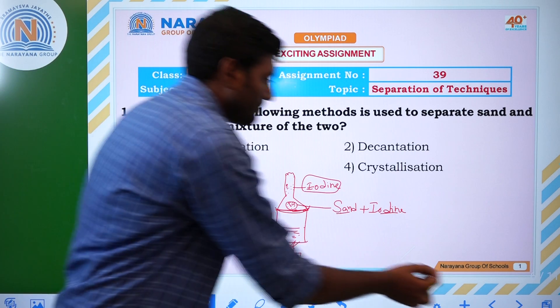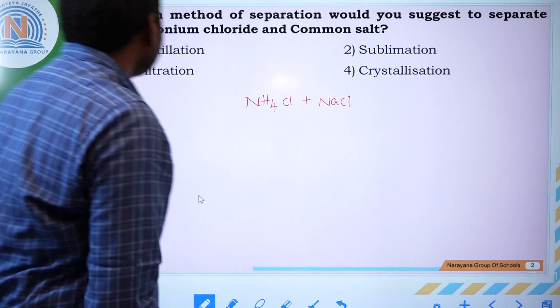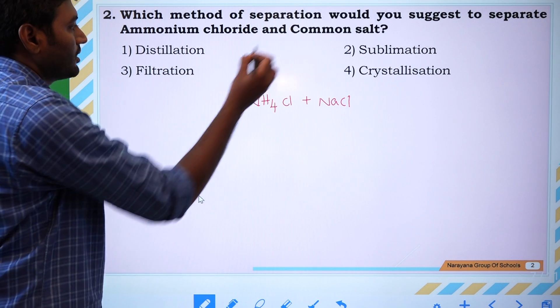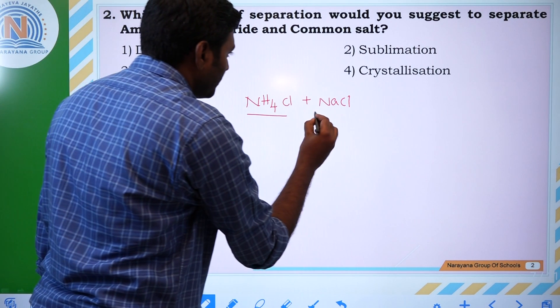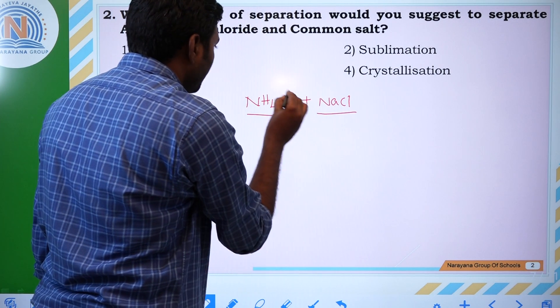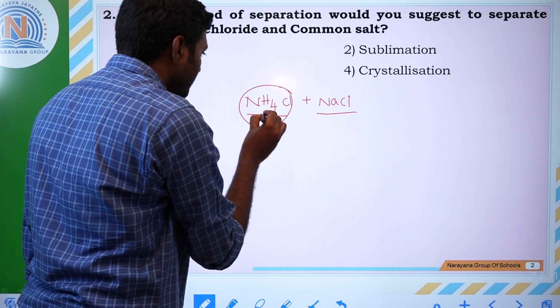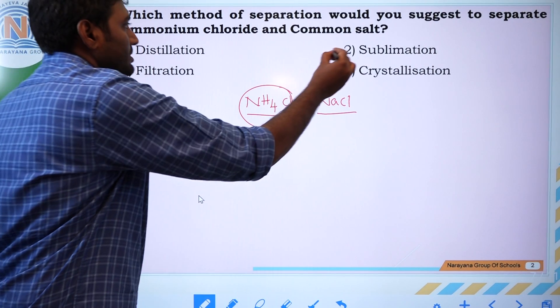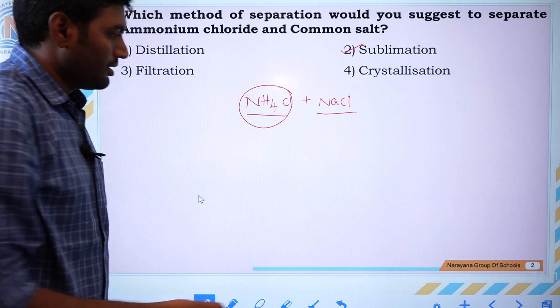Next question: which method of separation would you suggest to separate ammonium chloride and common salt? If you take ammonium chloride and common salt, ammonium chloride has an easily evaporated nature. Hence, we can use sublimation as the technique.